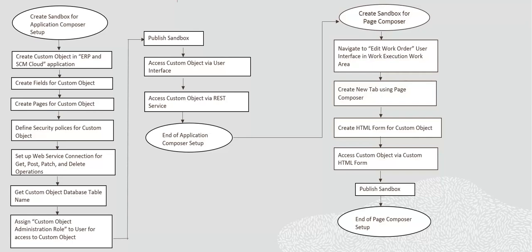Setup web service connection for GET, POST, PATCH, and DELETE operations — this creates REST service connection for custom object. Get the custom object database table name in user interface to manage database resources. Assign the custom object administration role to user for access to custom object. Finally, publish the Sandbox. The user can now access custom object via user interface and REST service. The integration setup for custom object entity using Application Composer is complete.